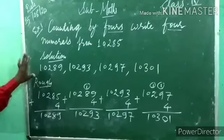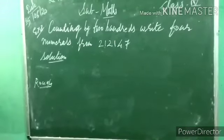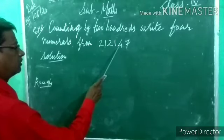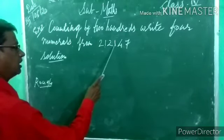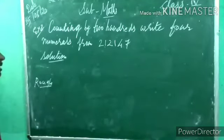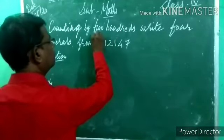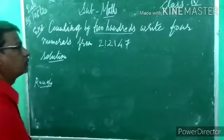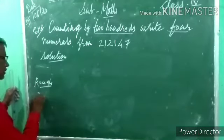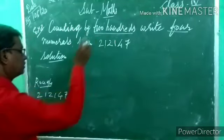Understood? Do the rough work first, then write the answer. Now example 2: the number is 2,12,147. We have to add counting by 200.